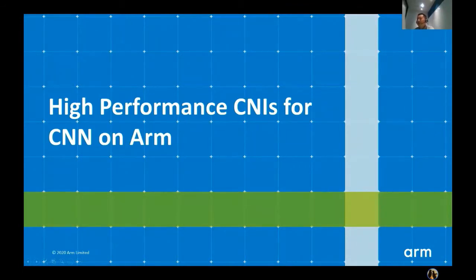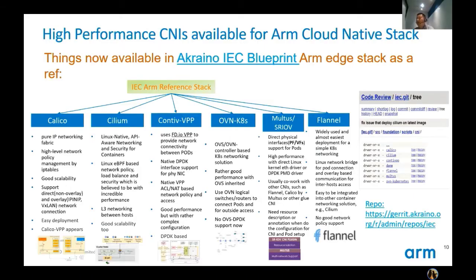Now I would like to talk about high-performance container networking interfaces for cloud-native networking on ARM. There is a lot of support for high-performance container network interfaces on ARM. We would like to give a brief introduction from our IEC reference stack, which is from the Akraino IEC blueprint, integrated into the IEC repo. The links are provided, and if you are interested, you could check out these CNIs.